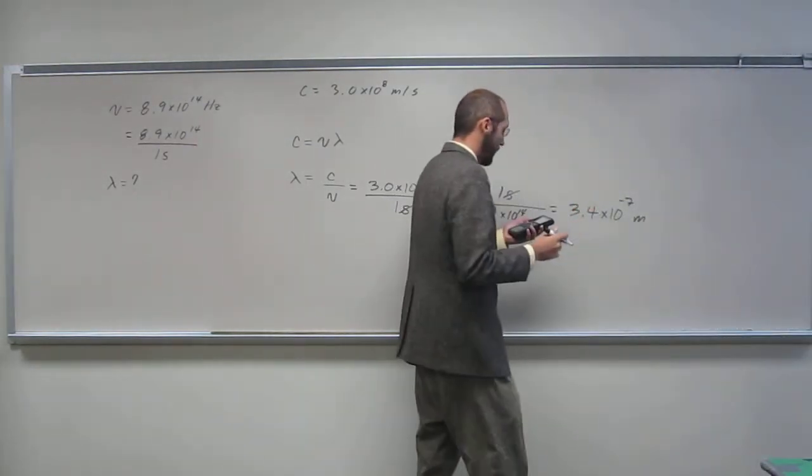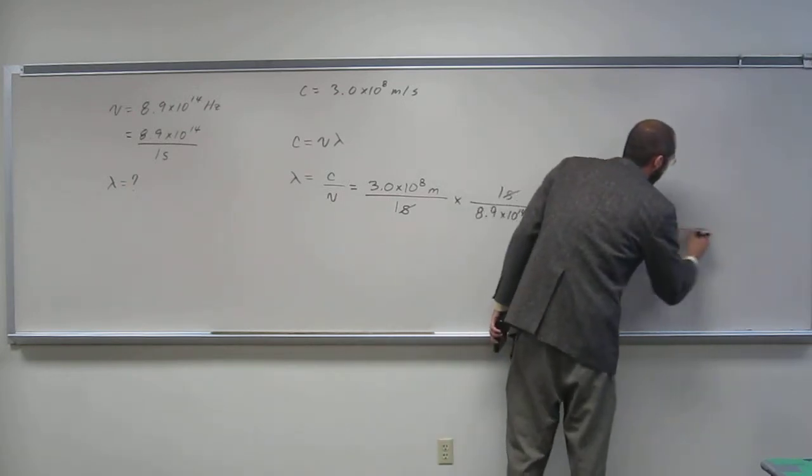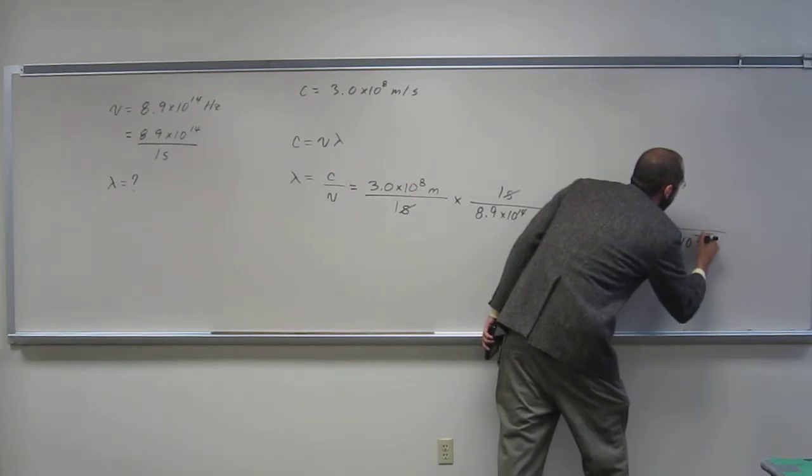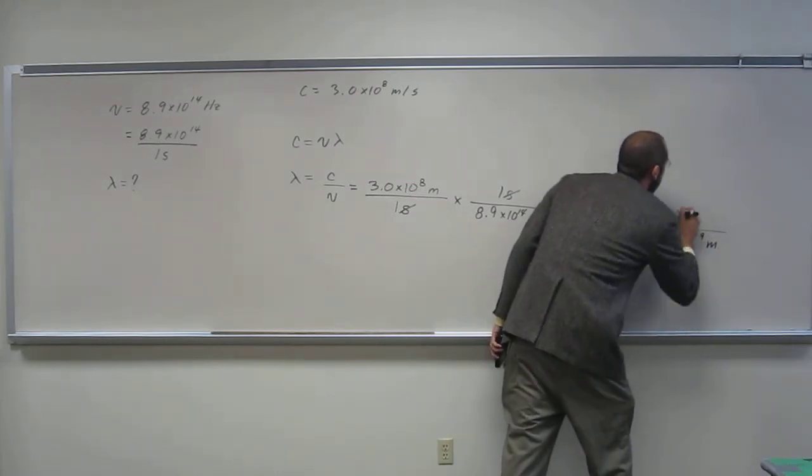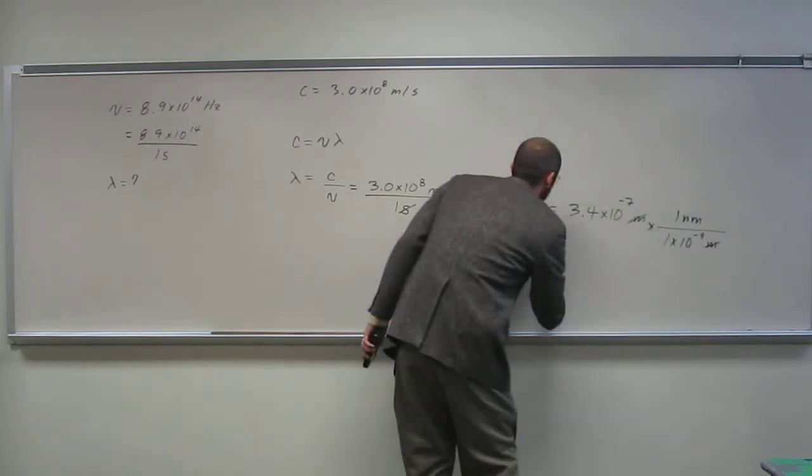So it would be nice to think of this as some other more normal type of unit. So let's multiply it by 1 times 10 to the negative 9th meters for 1 nanometer. Cancel that out.